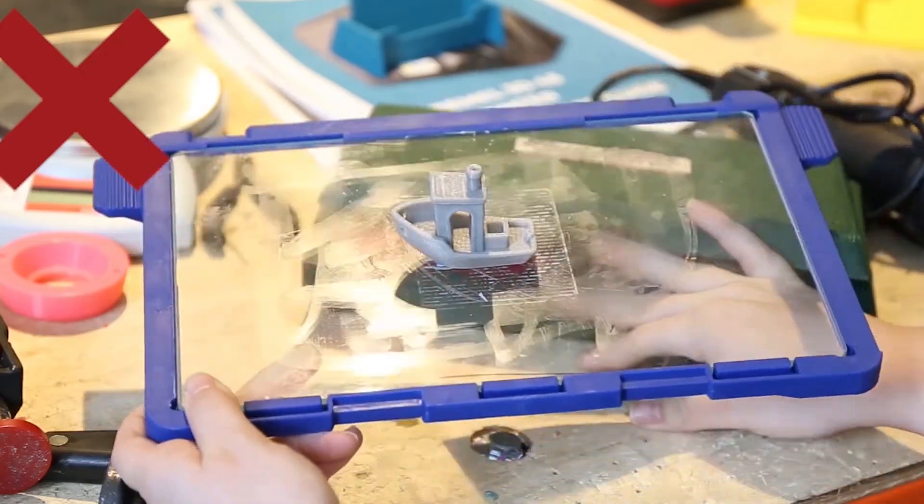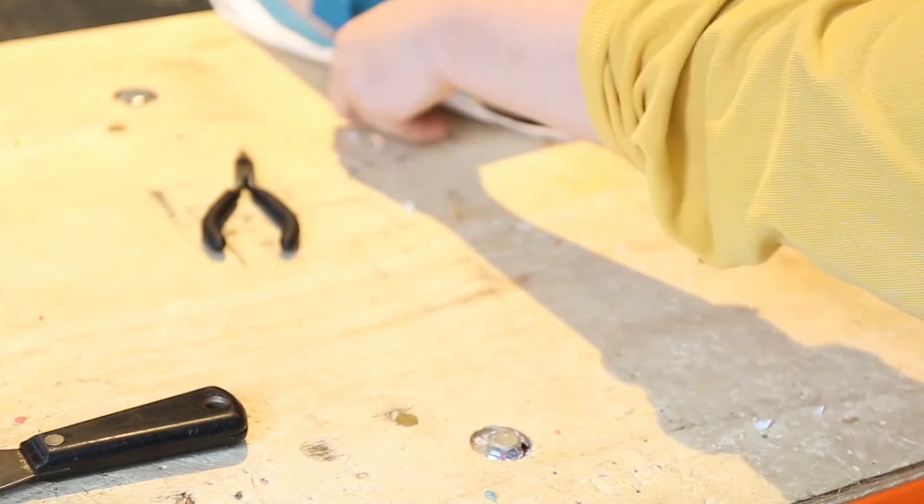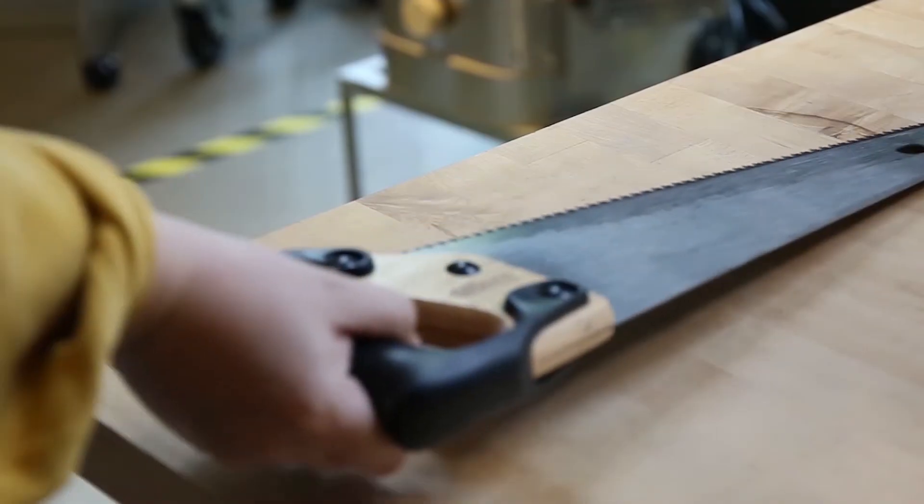Number four: always make sure your workplace is clean before working with hand tools. Having unnecessary clutter will restrict your freedom of movement and impact the performance of your tool. Number five: be aware of where you are placing your hand tool.